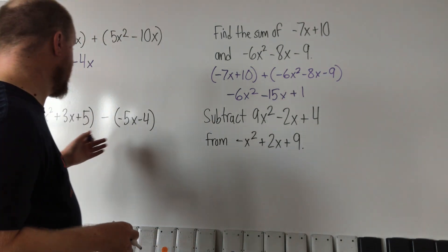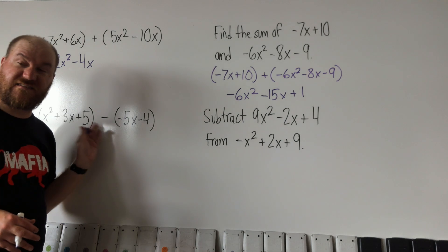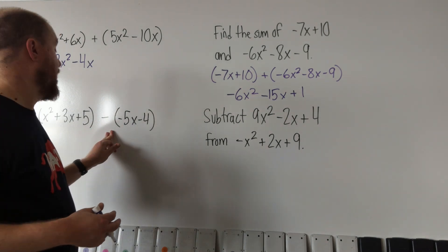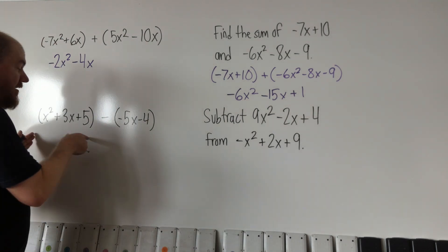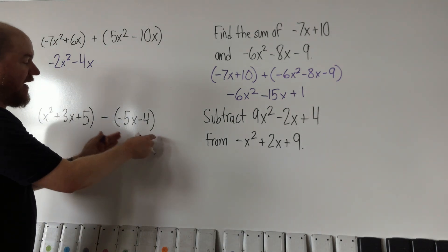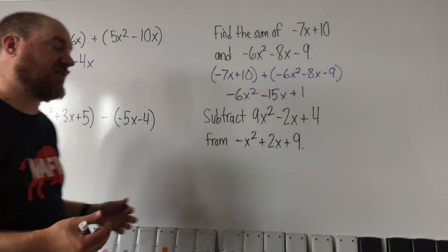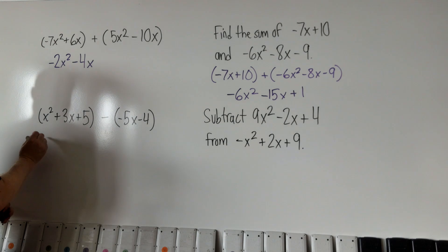So the third question here is same process except it's a minus, and that's going to change things quite a bit. Everything here needs to be subtracted by everything here. So in this case, before we actually start to combine like terms, we're going to drop these parentheses.